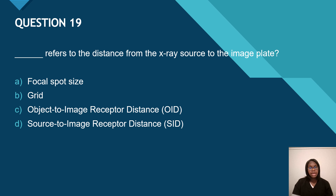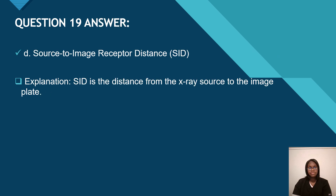Question 19: blank refers to the distance from the x-ray source to the image plate. Is it focal spot size, grid, object to image receptor distance (OID), or source to image receptor distance (SID)? It would be source to image receptor distance — SID is the distance from the x-ray source to the image plate.